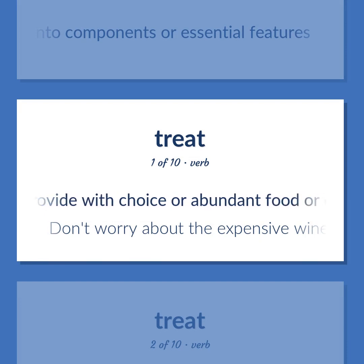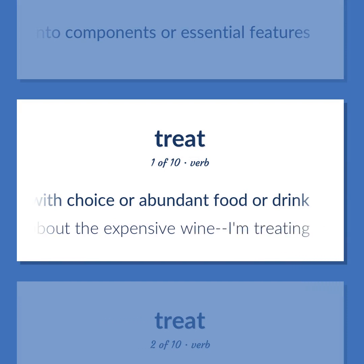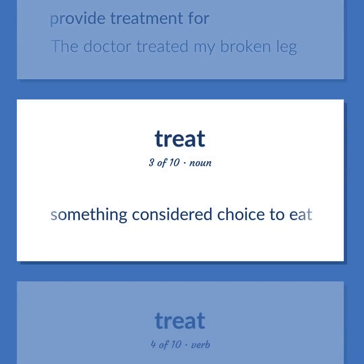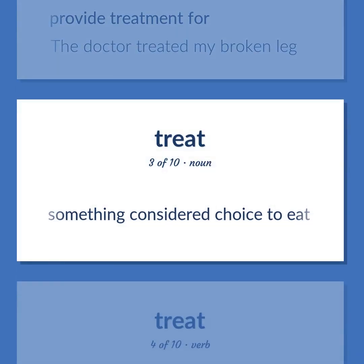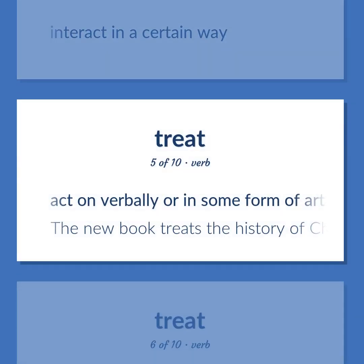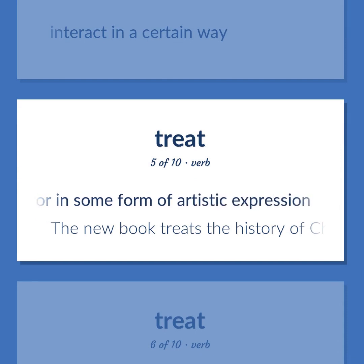Treat. Provide with choice or abundant food or drink: Don't worry about the expensive wine, I'm treating. Provide treatment for: The doctor treated my broken leg. Something considered choice to eat. Interact in a certain way. Act on verbally or in some form of artistic expression.